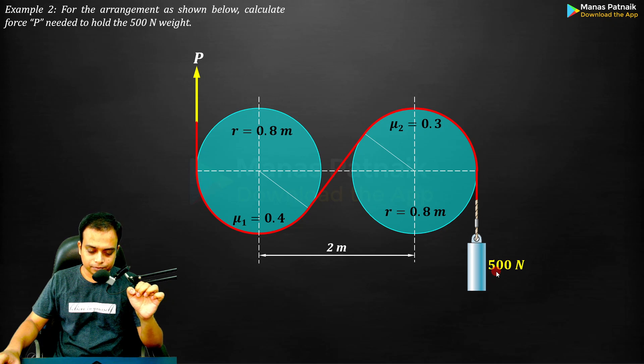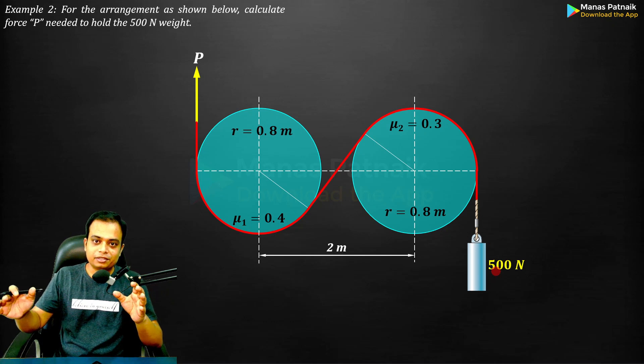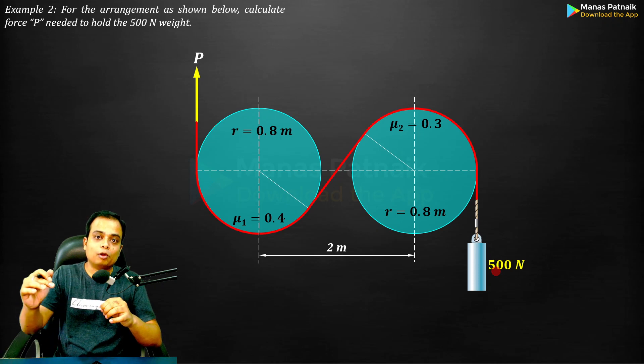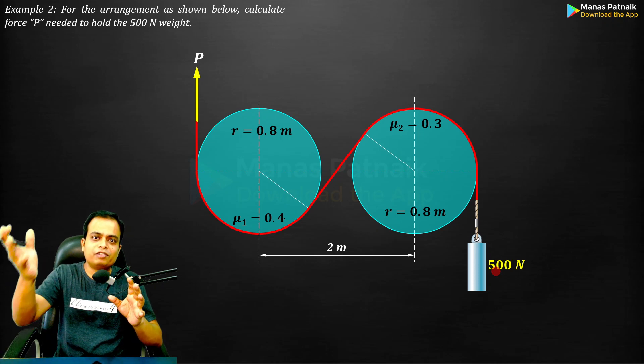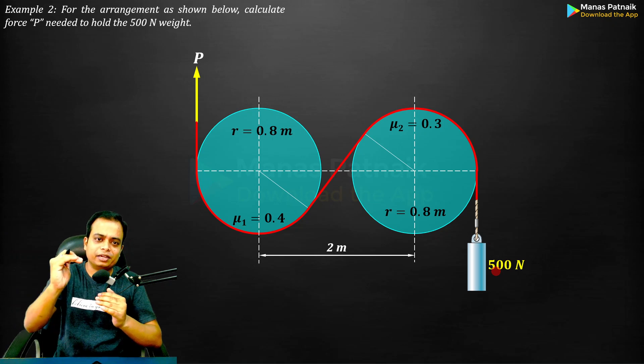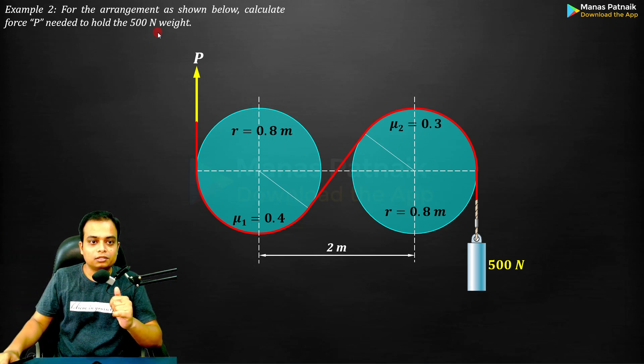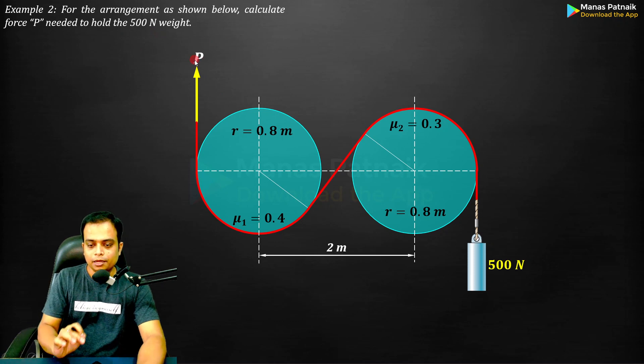How do we address such problems? In the previous example we had to lift a block - that was a different scenario, force needed to lift a block in the upward direction. Here it is different: we need to hold this 500 newton weight, and for that what is this force P?